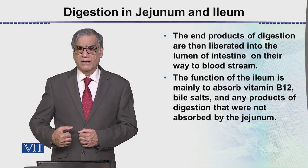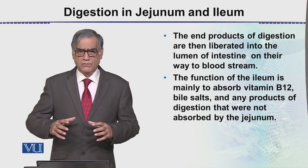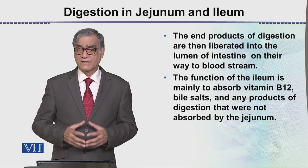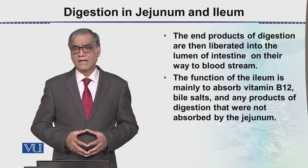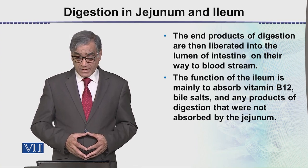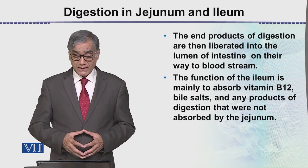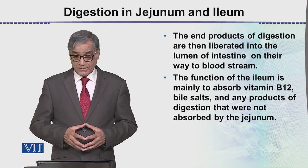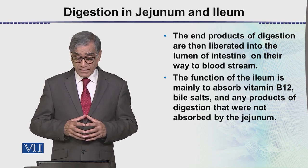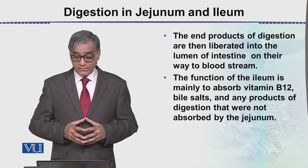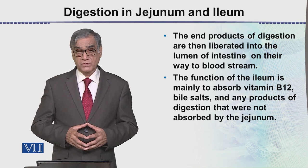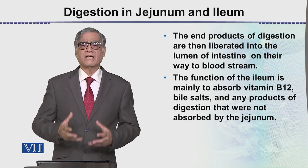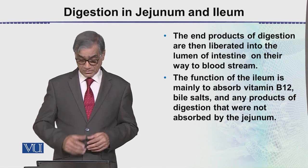On the way to the bloodstream, these products pass through the villi. The function of the ileum is mainly to absorb vitamin B12, bile salts, and any products of digestion that were not absorbed by the duodenum. The ileum further finalizes the absorption process.